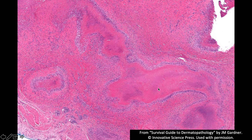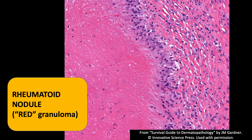Now this is a red palisaded necrobiotic granuloma because there's a bunch of fibrin in the middle. If there's a bunch of fibrin, these tend to be rheumatoid nodule. Rheumatoid nodule and granuloma annulare can closely mimic one another. If I have any doubt, I just call it palisaded necrobiotic granuloma and say the differential includes rheumatoid nodule and granuloma annulare. Clinically, they can check whether the patient has rheumatoid arthritis, or if it's a kid with a solitary lesion, it's probably not a rheumatoid nodule. These classically are going to be red, but I've seen exceptions both ways — GA with some fibrin, and rheumatoid nodule with some myxoid blue areas.